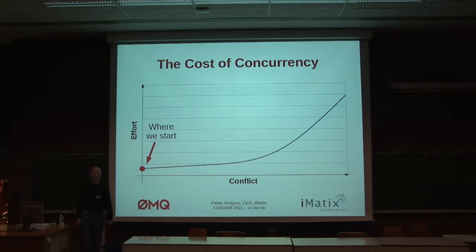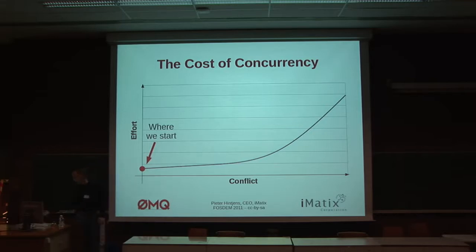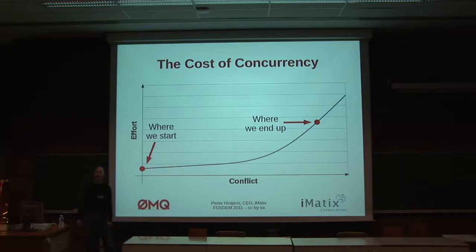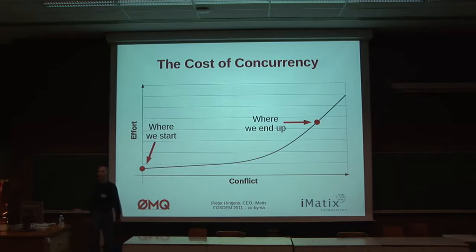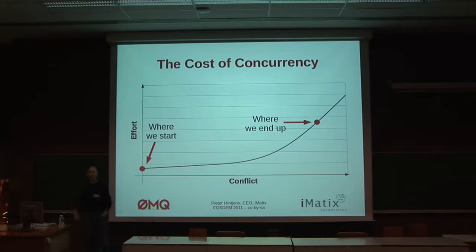The problem is that over time, if a system works, we're asked to make it bigger and handle more. We start going into multi-threading. One of those theories in IT is that pain is a bad sign — things should be easier, not harder. And the problem with multi-threading, as we learn it in school and university and as taught by basically every vendor, is that the more you try to scale your system, the more pain it takes exponentially.